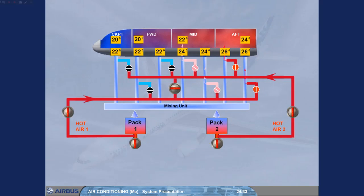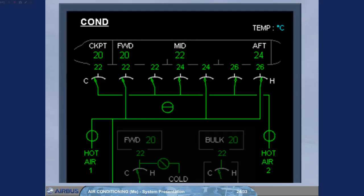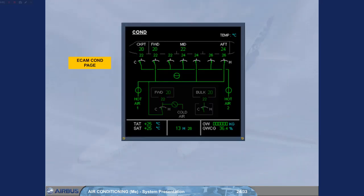The trim air system, the hot air system, the zone duct temperature, and the zone temperature indications are all displayed on the ECAM conditioning page.